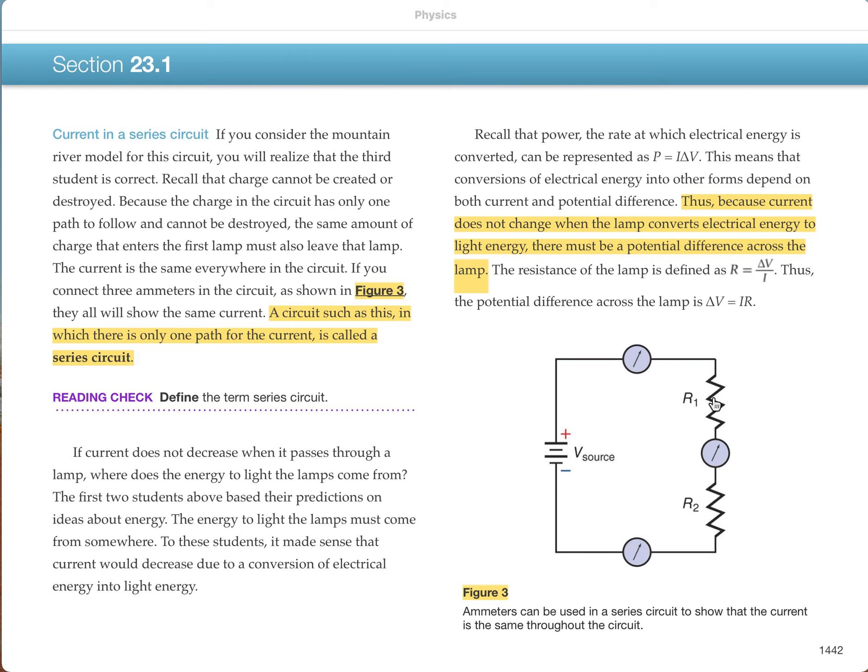And remember, energy per charge is voltage. So you can think about this as a charge pump. A battery pushes the charges up a certain number of volts. And then as they come down, they lose those volts as they give energy to the resistors.